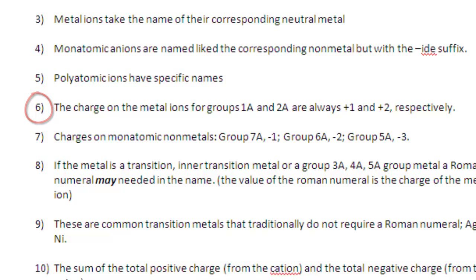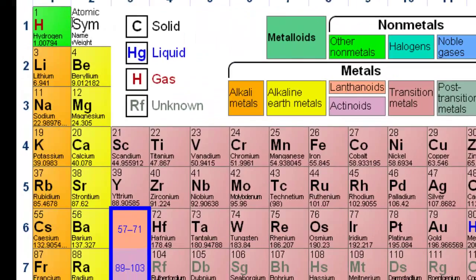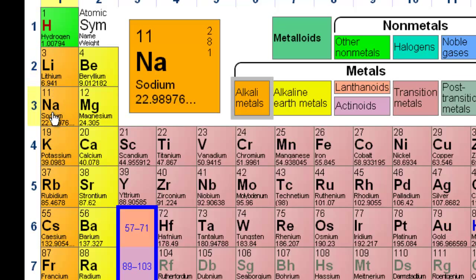The charge on metal ions for groups 1A and 2A are always +1 and +2, respectively. That is, hydrogen, lithium, sodium, potassium, rubidium, cesium. And these atoms here, when they become ions, cations, they're always going to be positive 1, or +1.